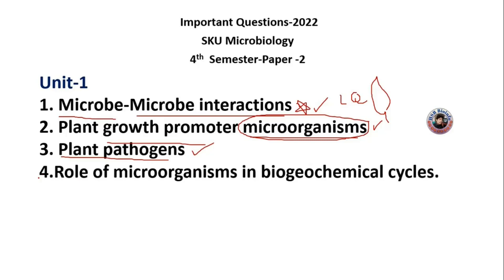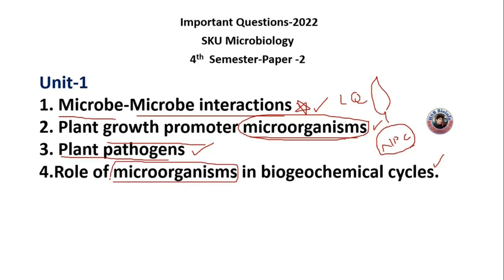Coming to the fourth question: the role of microorganisms in biogeochemical cycles. Very important cycles include the nitrogen cycle, phosphorus cycle, and carbon cycle. The cycling of nitrogen, phosphorus, and carbon is very important for microorganisms. This question is also very valid.